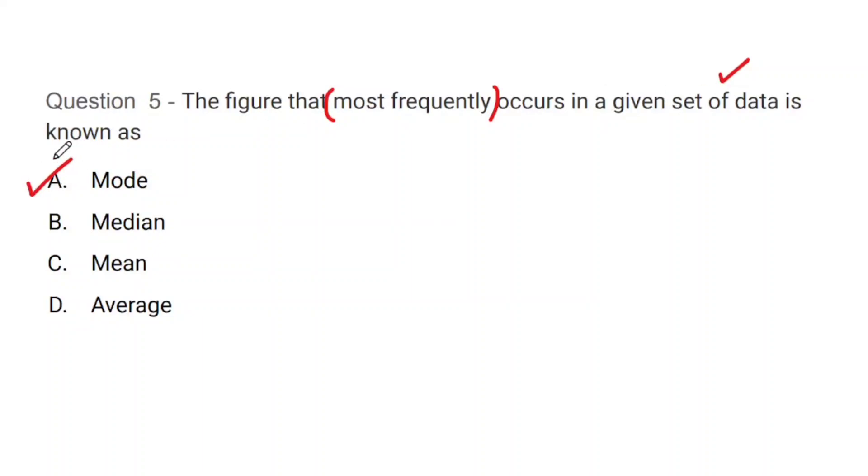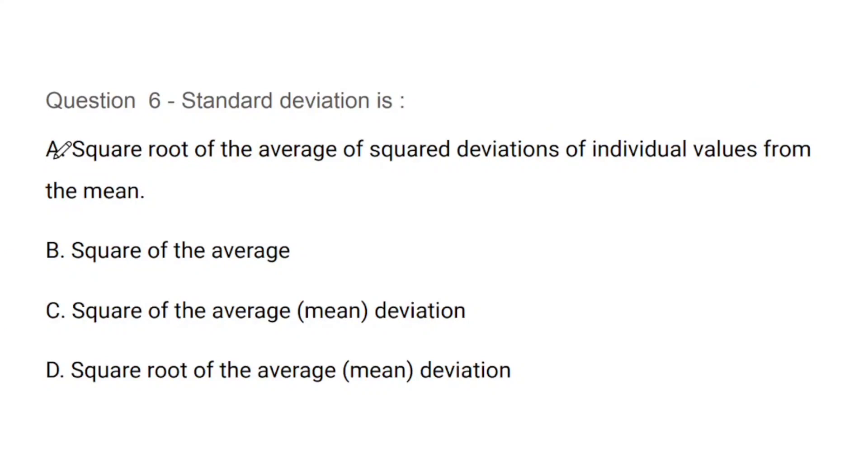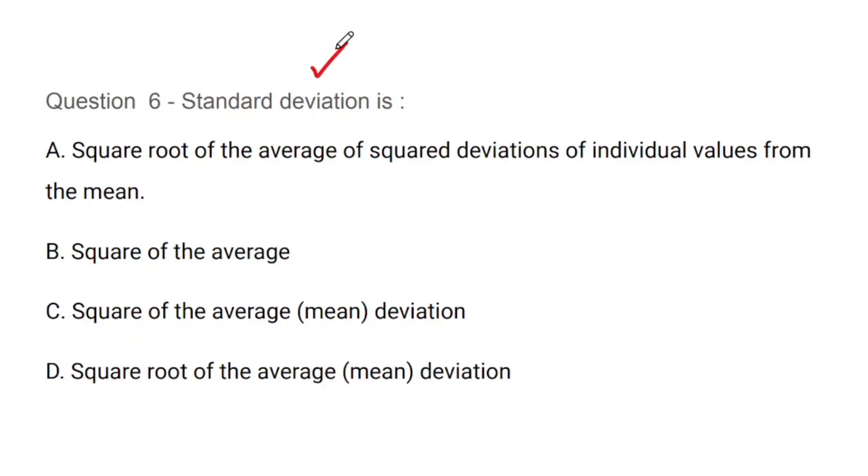Question number 6: Standard deviation is what - square root of average of square deviation of individual values from the mean, square of the average, square of the average mean deviation, or square root of average mean deviation. Very important question directly from the theoretical part of standard deviation. So all the terms you have to know the meaning of standard deviation. The correct answer is A. We always remember the square root of the average of the square deviation of the individual value.